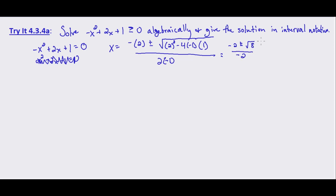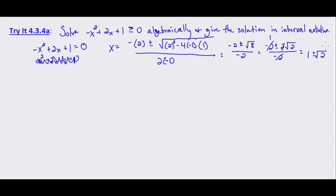Simplifying: negative 2 plus or minus the square root of 4 minus 4 times negative 1 gives us the square root of 8, all over negative 2. The square root of 8 simplifies to 2 times the square root of 2, so we have negative 2 plus or minus 2 root 2, all over negative 2. The terms cancel, giving us 1 plus or minus the square root of 2. So 1 minus root 2 is approximately negative 0.414, and 1 plus root 2 is approximately 2.414.